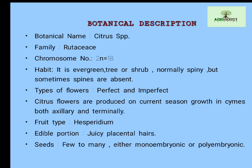it belongs to family Rutaceae and the chromosomal number is 2n = 2x = 18. The habit of citrus is that it is an evergreen tree or shrub. Normally citrus trees have spines, but sometimes spines are absent. The type of flower in citrus is perfect and imperfect — perfect flowers have both stamen and pistil, whereas imperfect flowers lack either stamen or pistil.